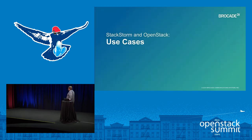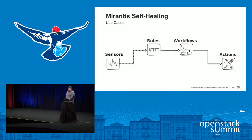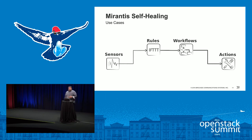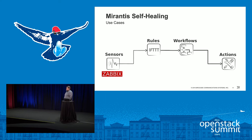Now I'm going to transition into a couple of use cases. This is by no means the extent of what you can do with StackStorm, but these are two powerful examples. The first one is how Mirantis uses it. I'll overlay their use case on the primitives diagram to show how they're using StackStorm at each level to automate an event that would normally wake up an operator. On the sensor side, Mirantis is using Zabbix to monitor their infrastructure — looking at an individual node in their OpenStack cluster to analyze its health, ensuring interfaces are up and that RAM and CPU are not overutilized.